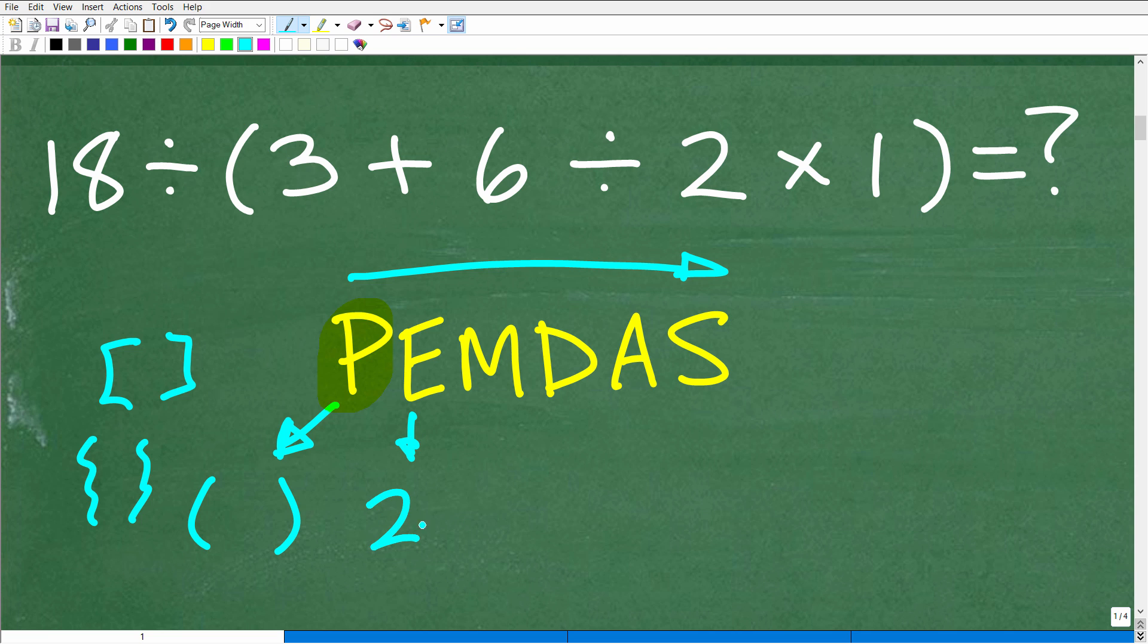E stands for powers, like 2 to the 3rd power. You might be saying, how come they don't put like another P here? Well, really, it stands for exponents. When we have a power like 2 to the 3rd power, this little number up here is called an exponent. This big number down here is called a base. The entire thing is a power. So really, E is exponents, but you can think of this as powers.